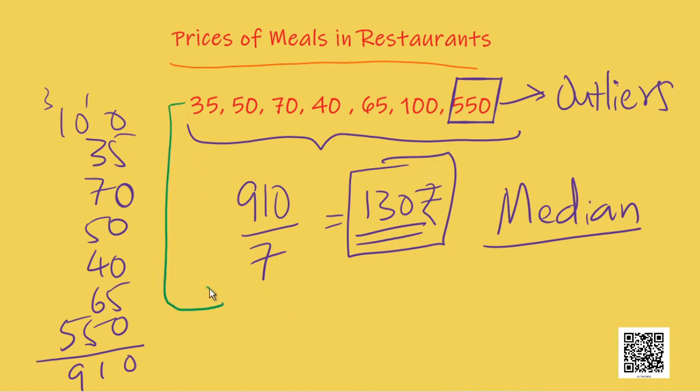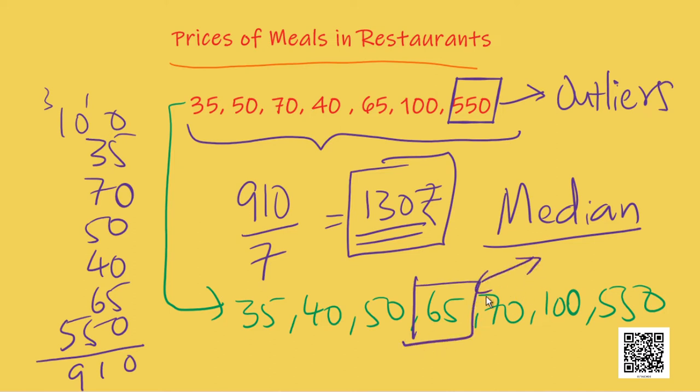So, the first step is the given data has to be arranged in an order. We will try to sort this data. Now, this data is in ascending order. What is median? So, median is the middlemost number in a group of data which is sorted. So, what is the middlemost number here? As you can see 65 is the middlemost number. So, we say the median of this group of data is 65. And as you can see, the number 65 represents this group of data better than the mean of 130 rupees. Isn't it?